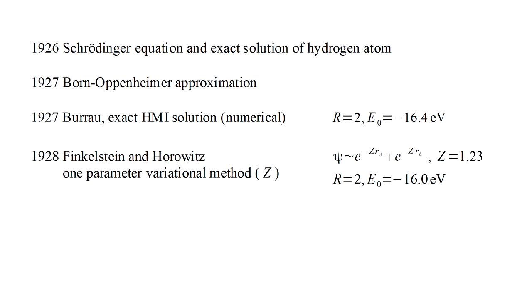In the following year, Finkelstein and Horowitz published their variational model. Now, it might seem like a step backward to publish an approximate solution to a problem for which the exact solution is known. In fact, it was very important.